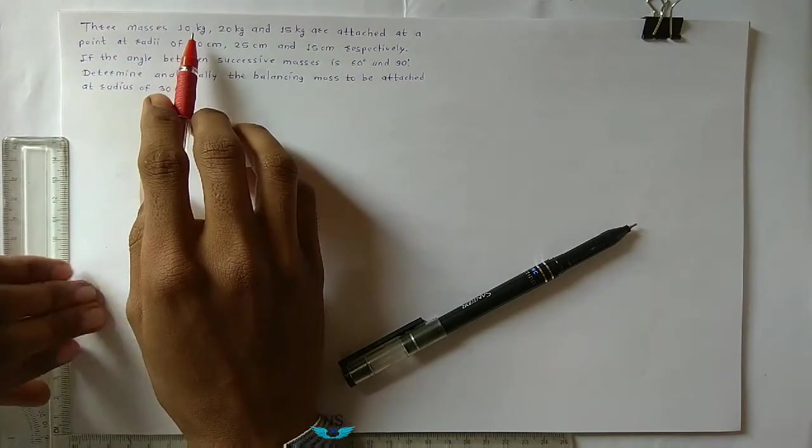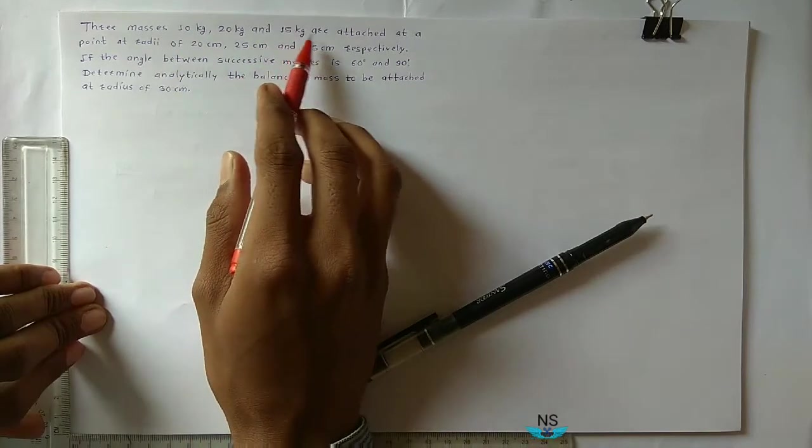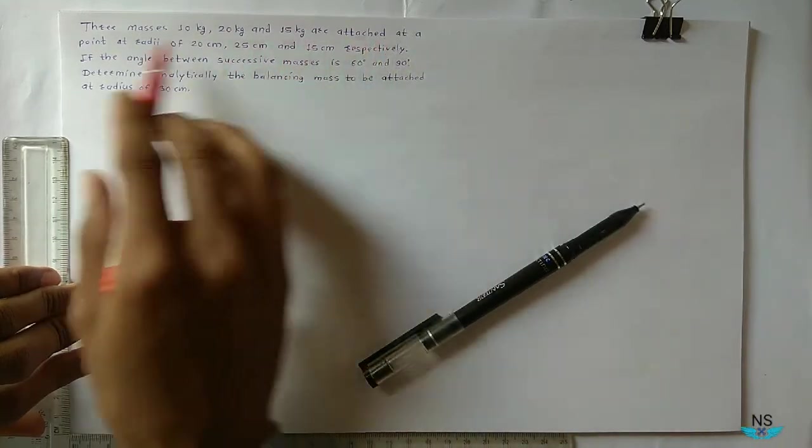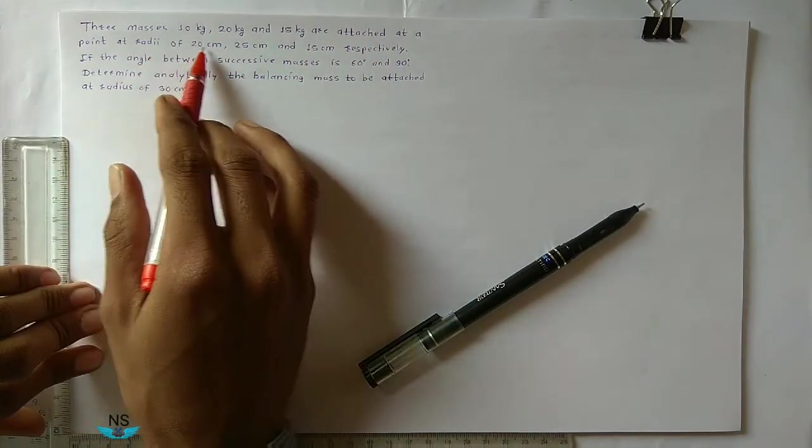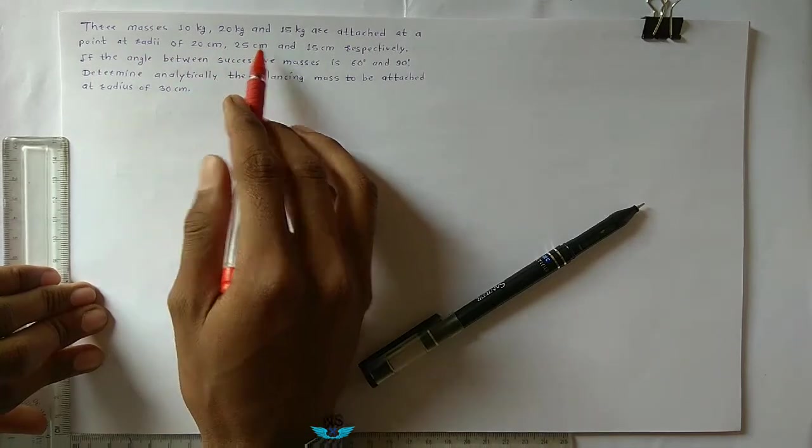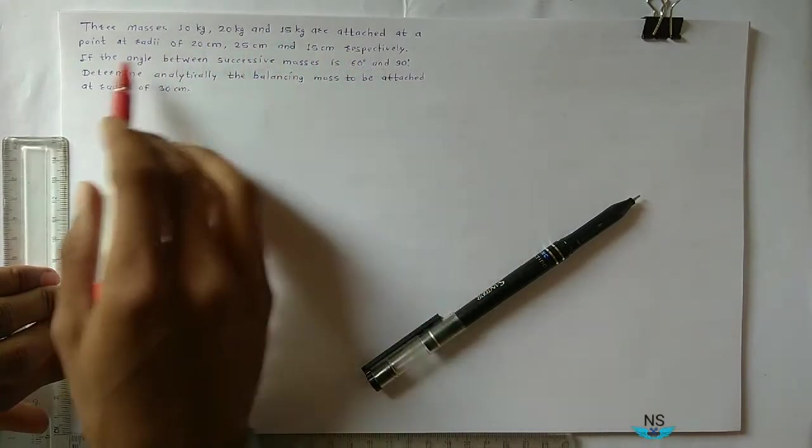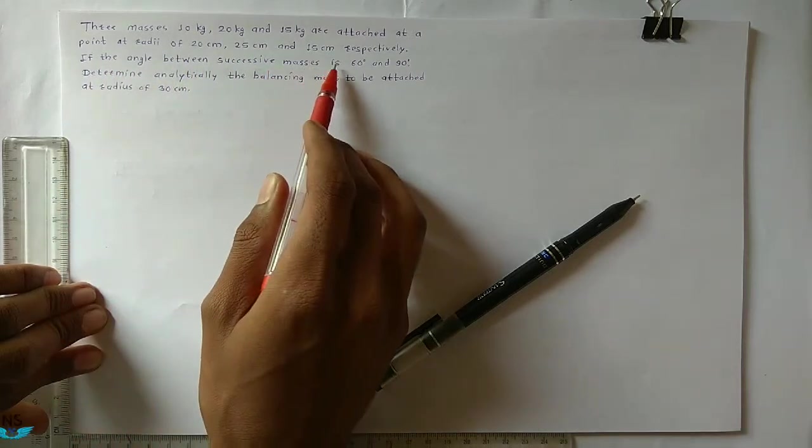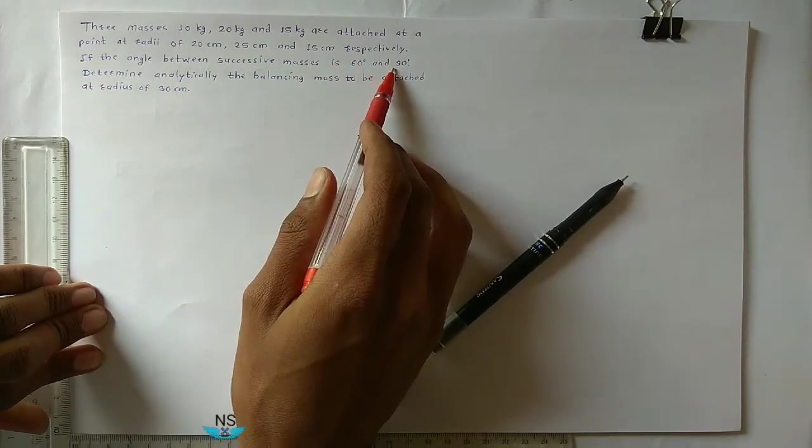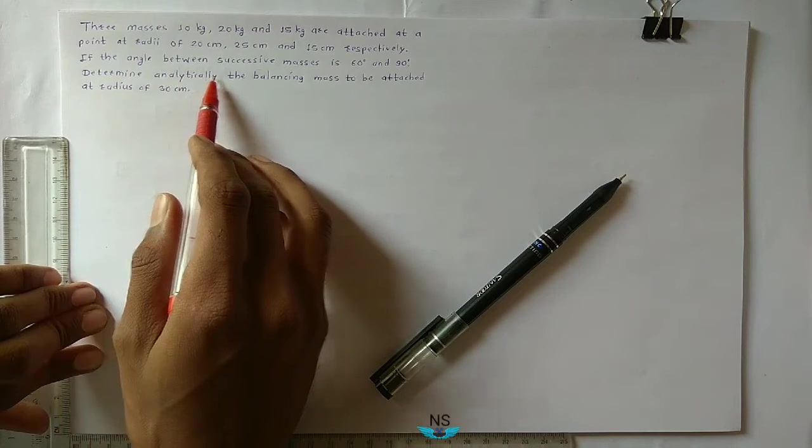Three masses 10 kg, 20 kg and 15 kg are attached at a point at radii of 20 cm, 25 cm and 15 cm respectively. If the angle between successive masses is 60 degrees and 90 degrees, determine analytically the balancing mass to be attached at radius of 30 cm.